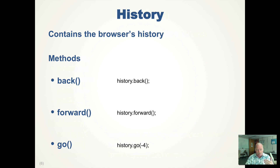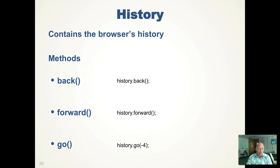History is conceptually a list of the websites or locations that have been viewed. There's a back method, which works just like pressing the back button, and a forward method, just like pressing the forward button. There's also the go method, which allows you to go — for example, minus four from the current location in history will back up four times, the same as hitting back four times. You can do positive numbers, which is the same as hitting forward a couple of times. So you can manipulate what the user sees in JavaScript using the history.